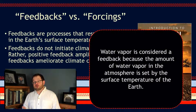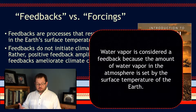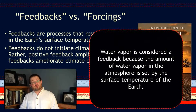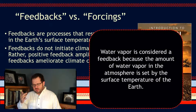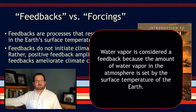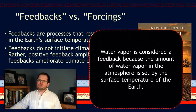For example, water vapor. Water vapor is considered a climate feedback because the amount of water vapor in the Earth's atmosphere is determined by the surface temperature of the Earth. As the planet gets warmer, the amount of water vapor in the atmosphere can increase, and that might result in further temperature changes. But the original temperature change cannot be caused by the water vapor.